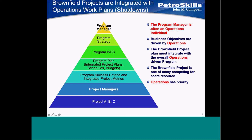There is a program strategy — the turnaround may be a two-week event. Then a WBS or work breakdown structure, i.e., the things that need to be done. Then the plan — typically a very detailed schedule, often detailed to the half-day or four-hour cycle. Then success criteria and project metrics, then the PMs — and these projects are at the very bottom of the pyramid.